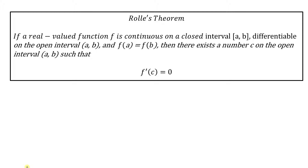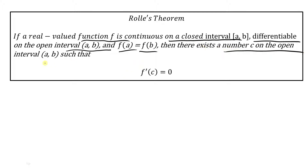Rolle's Theorem says that if you have a real-valued function f that is continuous on a closed interval between a and b, and it is also differentiable on the open interval a to b, and f(a) equals f(b), then there exists a number c on the open interval a to b such that f prime of c equals zero. Therefore, there is at least one point c where the slope of the tangent line is exactly zero.